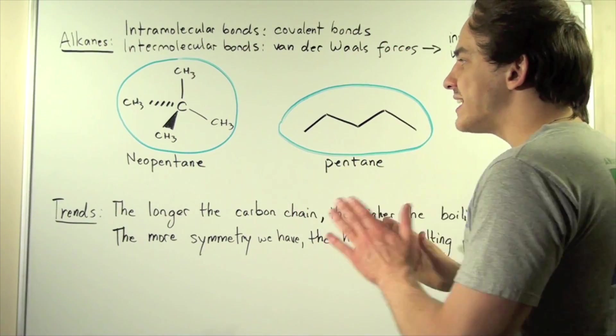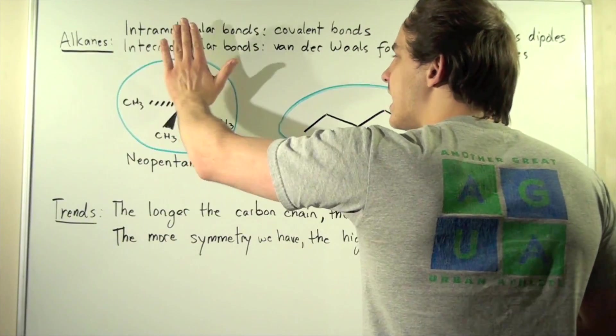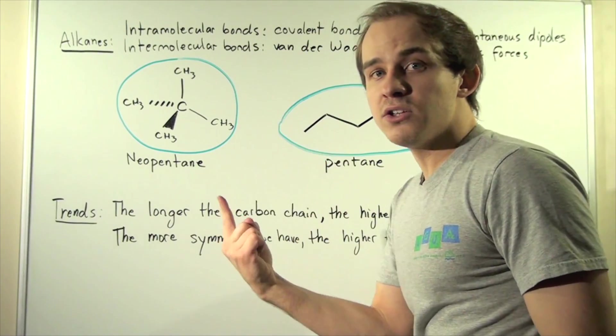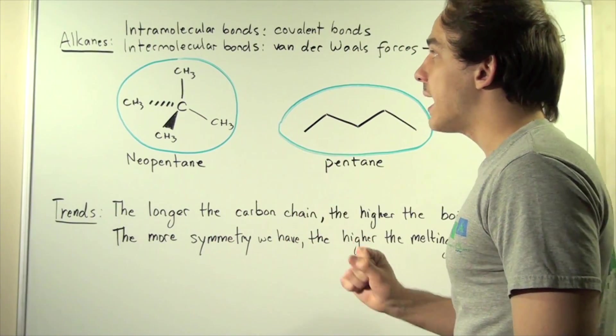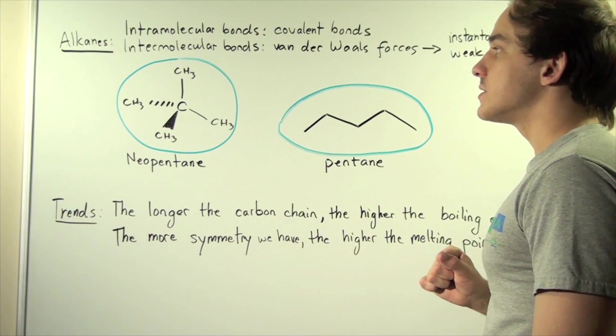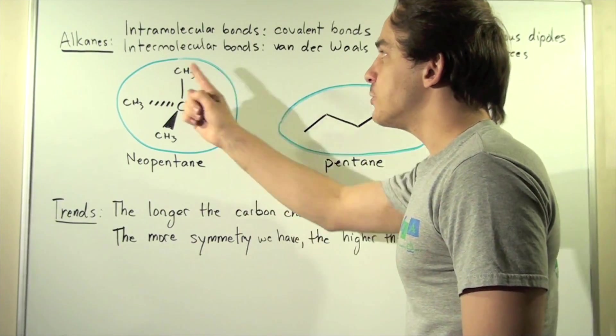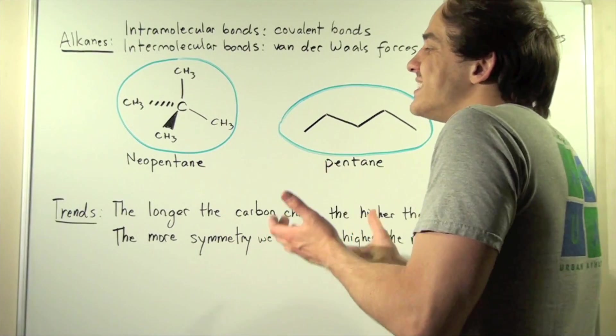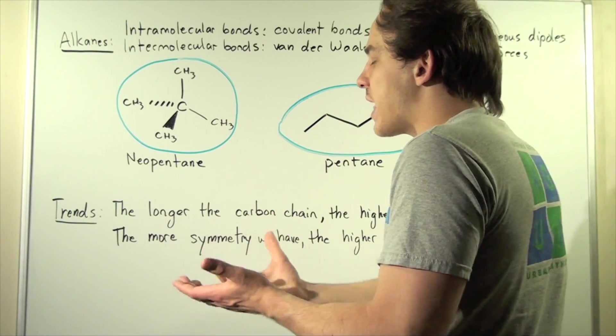Well if we just examine this molecule by itself, if we simply have one molecule or one compound, that means we have no intermolecular bonds. Because in order to have an intermolecular bond, you have to have a second compound next to that compound.